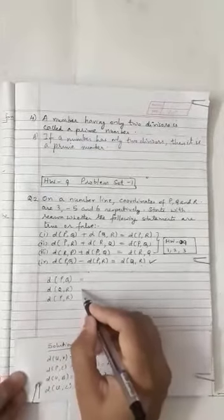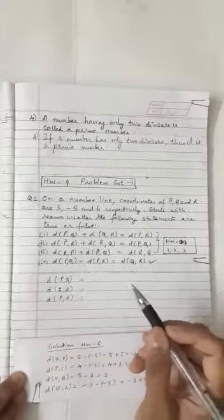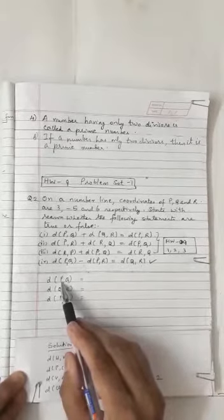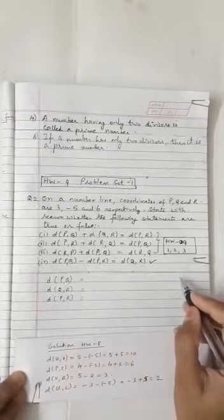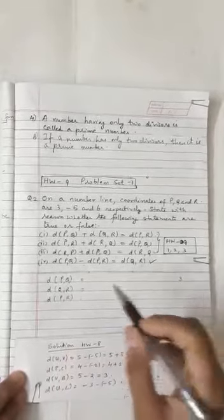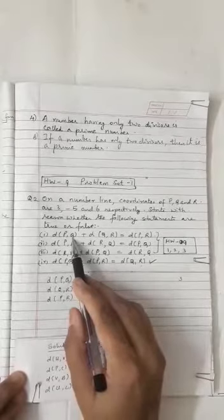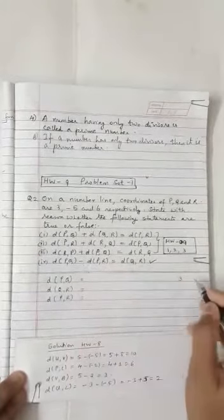Now what is coordinate of point P? Coordinate of point P is 3 and coordinate of point Q is minus 5. So 3 is greater than minus 5.